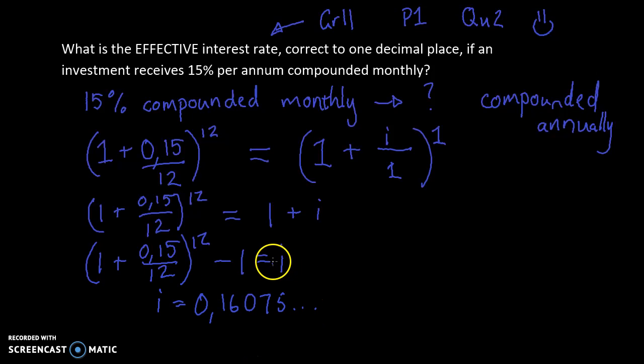The reason why I've written it like that is because they want the interest rate, so I'm going to change it to be a rate percentage. But now they also want it to one decimal place. So let's just put the percentage sign there. Let's round it off to one decimal place where it becomes 16.1%.